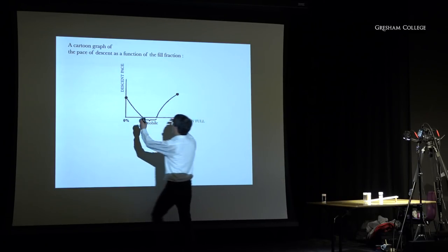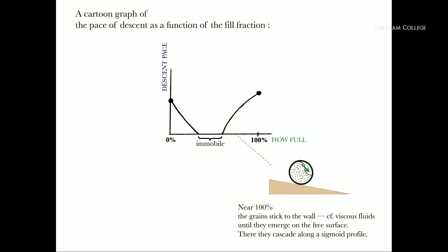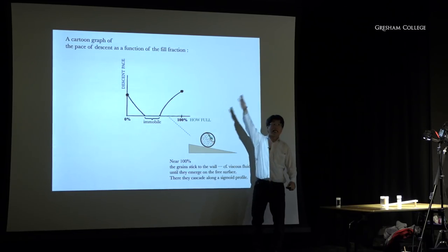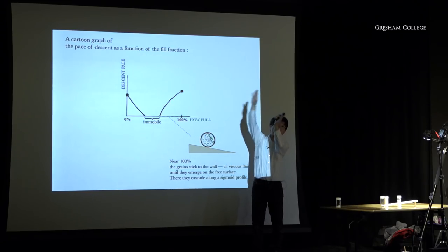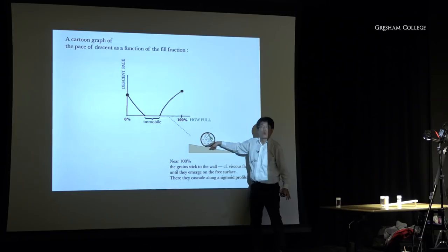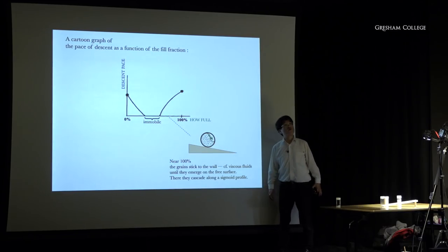If you plot descent pace as a function of fill level, the two endpoints roll fast, but in the middle there is a whole basin of immobility. Just outside that basin toward fuller, as with two-thirds, there is an avalanche — a sigmoidal wave of grains going down the interface, while grains in the rest of the jar stick to the inner wall. This is behaving like a viscous fluid.